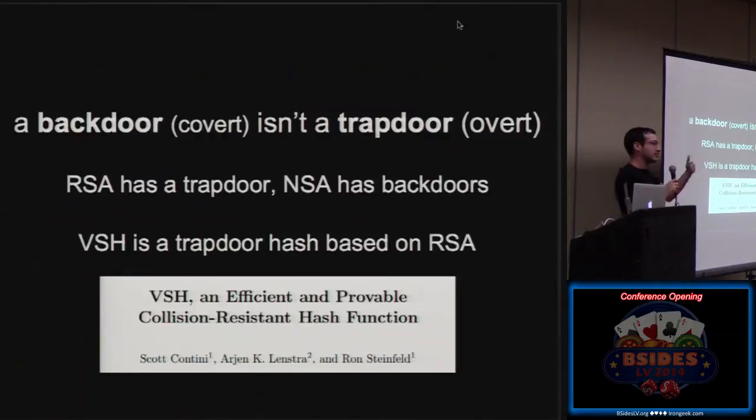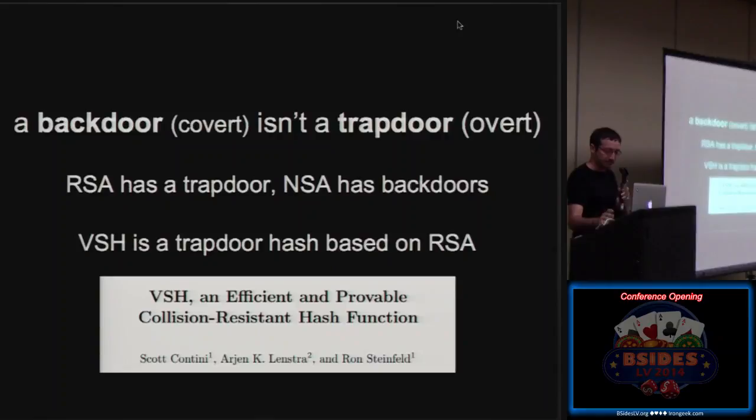A backdoor is not a trapdoor. The trapdoor is overt. You know that there's something. You know that there's a secret that if you know you can invert a function, a backdoor is covert. It's not supposed to be there. So RSA, the RSA function has trapdoor, which is the private key. NSA has backdoors, and RSA has NSA backdoors as well. And you have a function called VSH, very smooth hash, which is a trapdoor hash function. It's interesting because it's based on the RSA function, on big numbers arithmetic. And if you know the secret, if you know the private key, if you know the factorization of the big number, then you can find collisions efficiently.